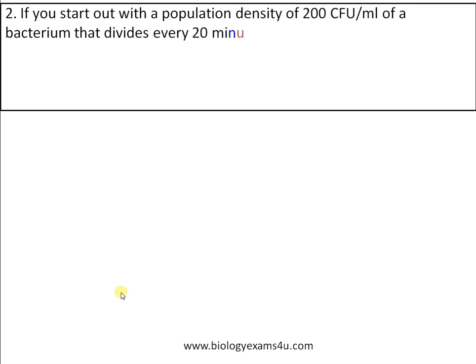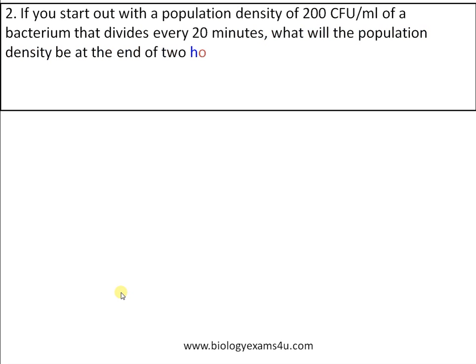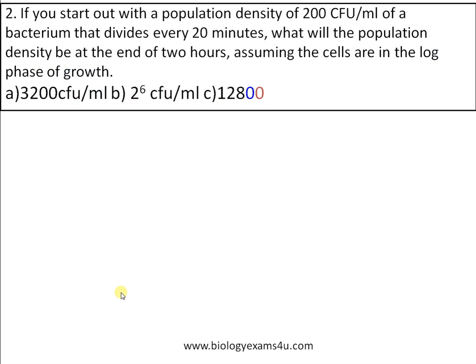Let's take one more question. If you start with a population density of 200 CFU per ml of a bacterium that divides every 20 minutes, what will be the population density at the end of two hours, assuming cells are in the log phase of growth? Options: A) 3200 CFU/ml, B) 2^6 CFU/ml, C) 12800 CFU/ml, D) 200^6 CFU/ml.